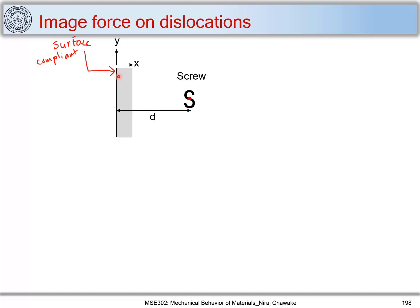This dislocation is at a distance d from the surface. Let us consider the point O to be (0, 0). We are doing this to find out what is the force being exerted by this surface on this screw dislocation. The screw dislocation we are considering is a pure screw and has an infinite length — the dislocation line is infinite and is along the z-axis.